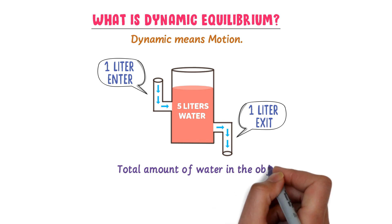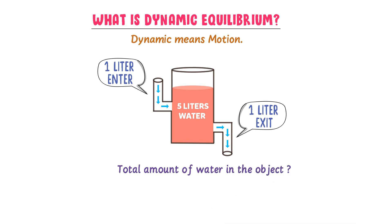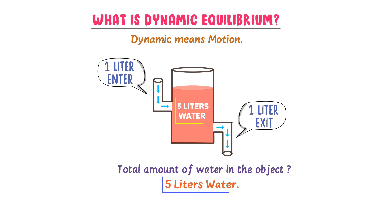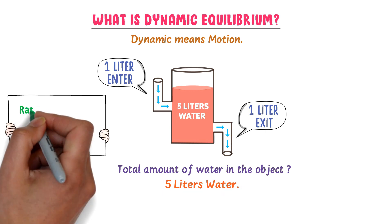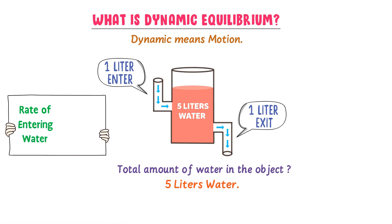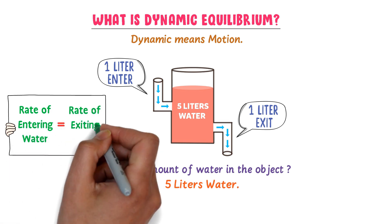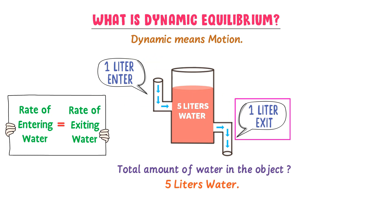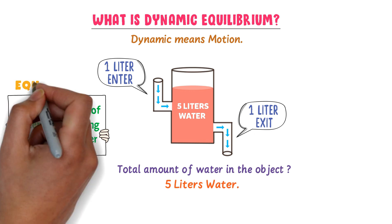What about the total amount of water present in the object? The total amount of water is still 5 liters in the object. It is because the rate of entering water into the object is equal to the rate of exiting water from the object. If 1 liter of water is entering the object, then 1 liter of water is exiting. Hence we say that entering and exiting of water is in equilibrium.